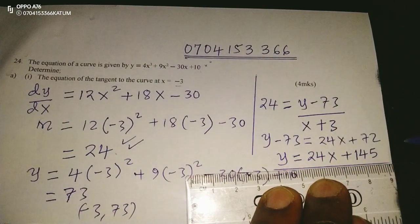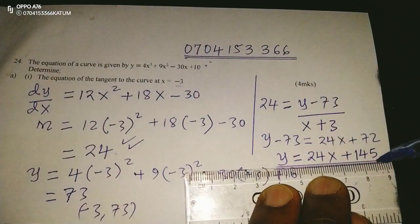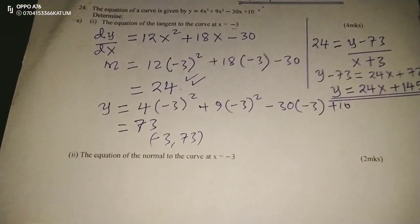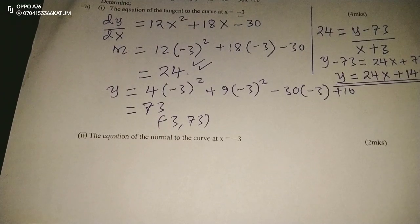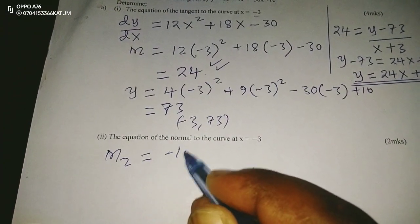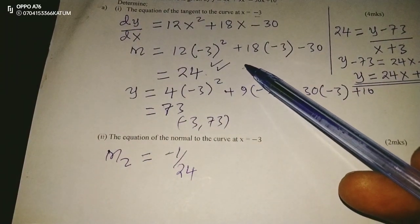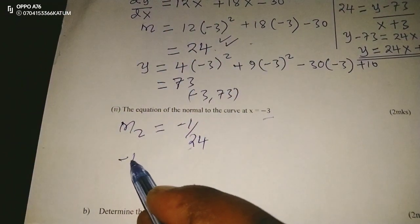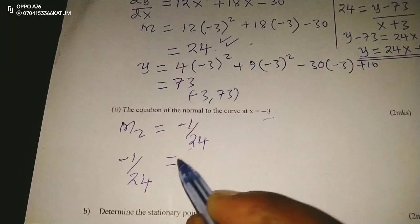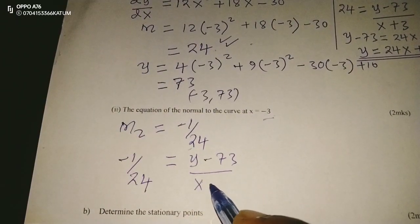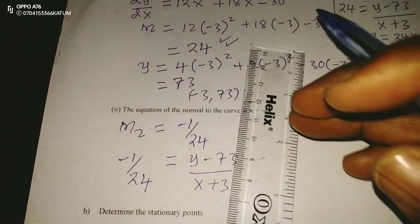Moving to part b, finding the equation of the normal. The normal is a perpendicular line to the tangent at a particular point. That means the gradient of the normal, gradient 2, is going to be negative 1 over 24, so that when multiplied with 24 we get negative 1 — since the normal and tangent are perpendicular. The point remains the same: at x = −3, y = 7.